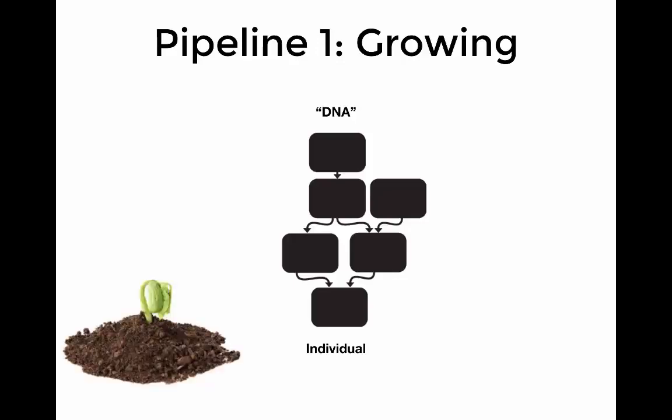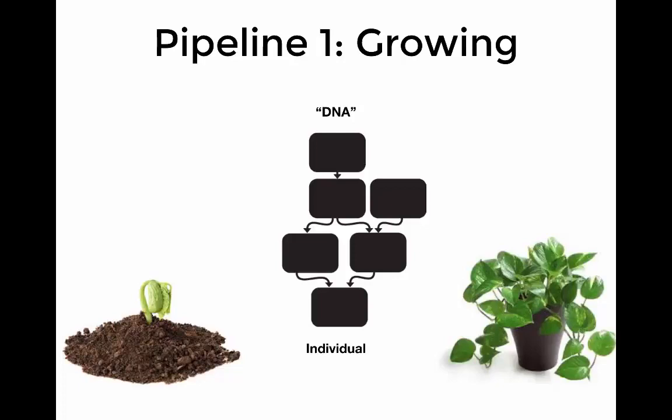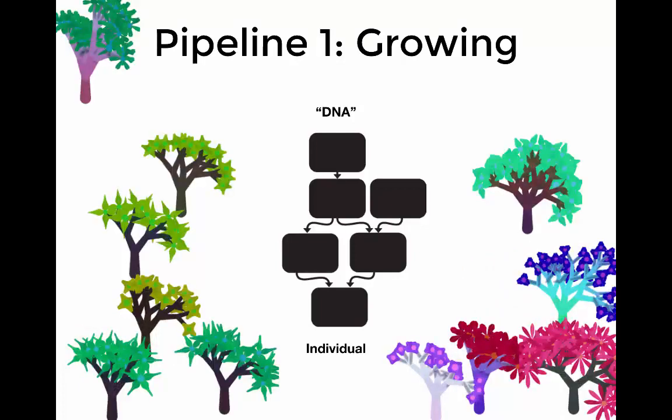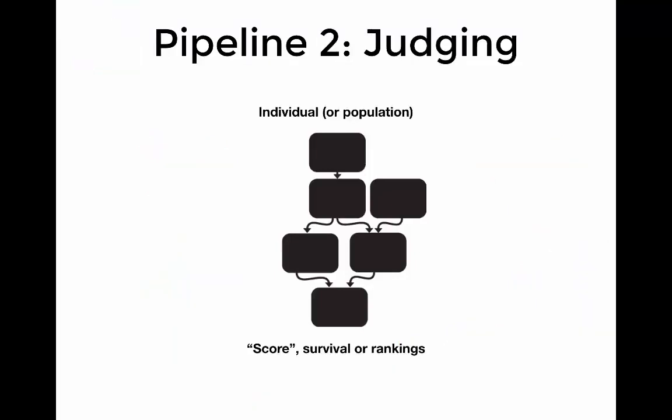You can do this with really lots of different algorithms. The algorithm itself doesn't matter as long as you have a pipeline that takes some DNA and turns it into an individual. The DNA and the individual will depend on the project that you're working on. So pipeline two, judging. This takes an individual or a population of individuals and then generates a score, survival, or rankings. So you could say that the user decides which one that they like best. So this is a very simple pipeline where it just shows an individual on screen and the user upvotes it or downvotes it.